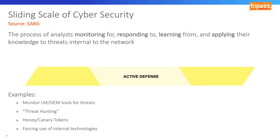Active defense means you may direct the attacker to a specific area of the network, prevent them from utilizing part of their exploit kit, and force them out of their comfort zone. An attacker is used to using the same set of TTPs — tactics, techniques, and procedures — ingrained into their psyche. If they're coming in via TOR and you block TOR, they may use a less anonymous VPN. If you block their UAC bypasses, they may try other exploits, further shedding light into their activities.